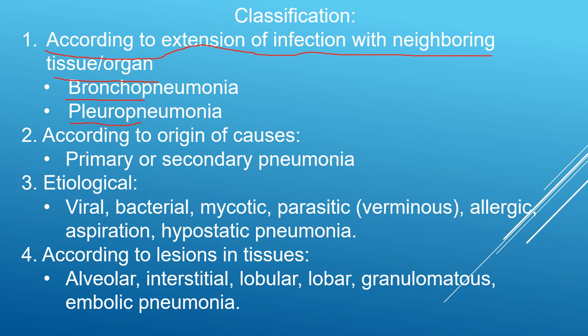Another classification is according to the origin of the causes. If the cause acts directly on the alveoli and lung parenchyma, that is called primary pneumonia. If some other condition occurs first and then pneumonia results indirectly, that is called secondary pneumonia.